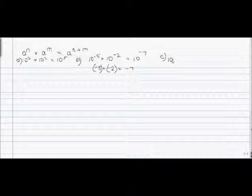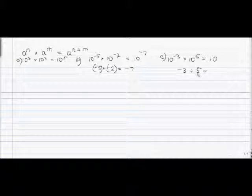Next: 10 to the negative 3 times 10 to the fifth. We keep the same base and add the exponents: negative 3 plus 5. Here the signs are different — one is negative and one is positive — so we subtract the smaller from the larger: 5 minus 3 gives 2, and we keep the sign of the larger number, which is positive. So the answer is 10 to the second.